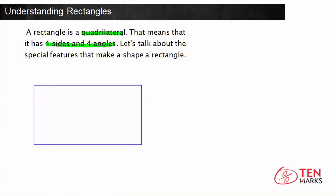Now let's talk about the special features that make a shape a rectangle. So I've drawn a rectangle here in blue, and the first thing to notice about a rectangle is that all four angles are right angles. And I'm going to mark them.